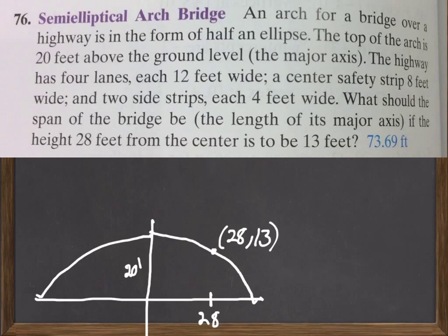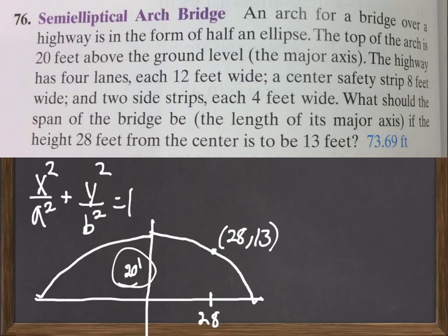So, we have our equation. Again, if we put our center at 0, 0, x squared over a squared plus y squared over b squared equals 1. And now, we're told in this problem that it's 20 feet. The top is 20 feet above the center. So, we're actually told what b is.